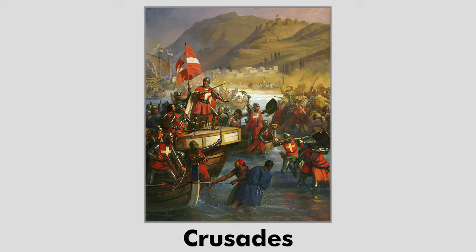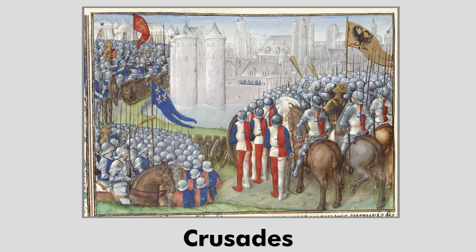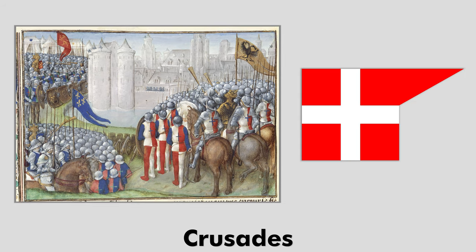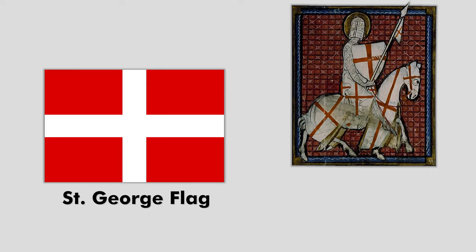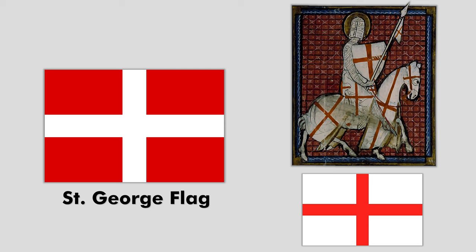The colors red and white were also significant during this period. When the Holy Roman Empire took part in the Crusades, a war flag was flown alongside the black and gold imperial banner. This flag, known as the St. George flag, was a white cross on a red background — the reverse of the St. George cross used as the flag of England.